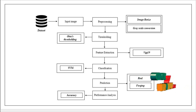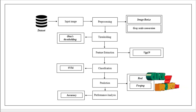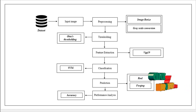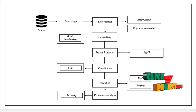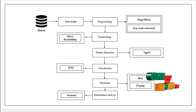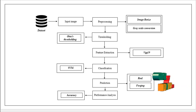After pre-processing, we implement thresholding. Here we convert the images into binary using Otsu's thresholding, converting the pre-processed image into a binary image. Then we implement feature extraction — extracting features from the pre-processed image using VGG-19. After that, we implement the classification algorithm. With the help of this algorithm, we identify whether the input image is genuine or forgery using support vector machine.